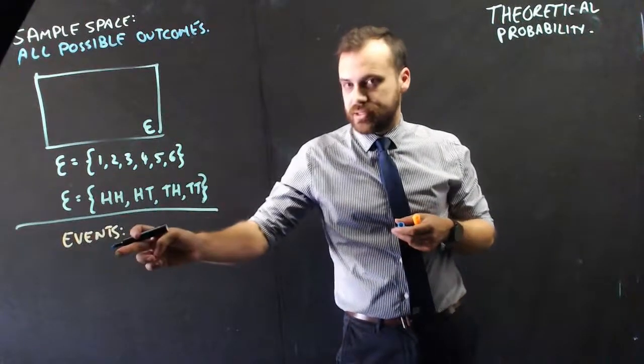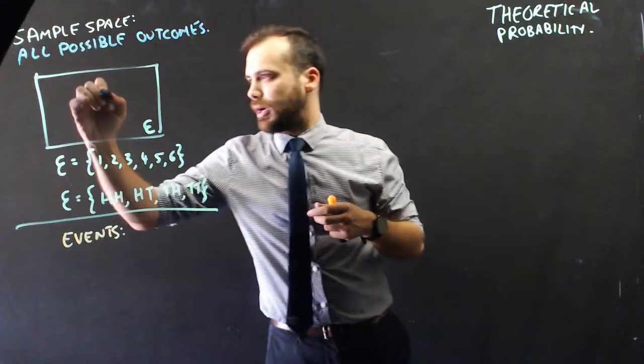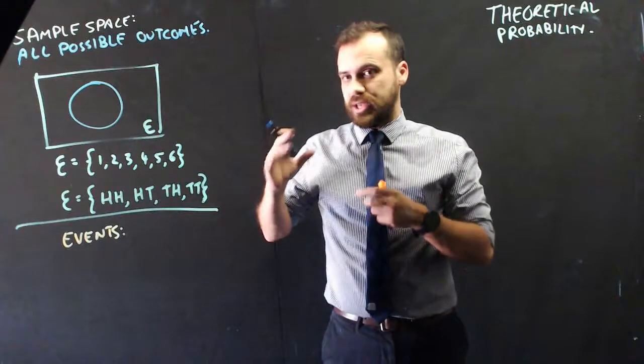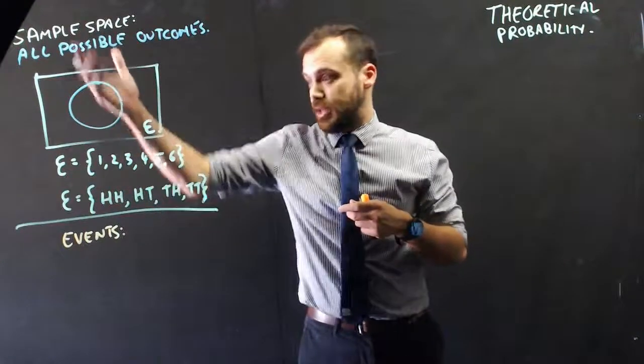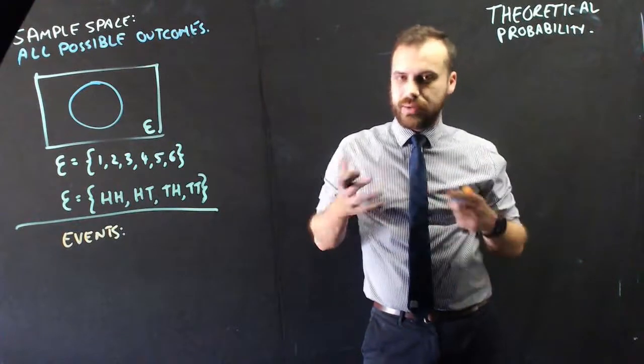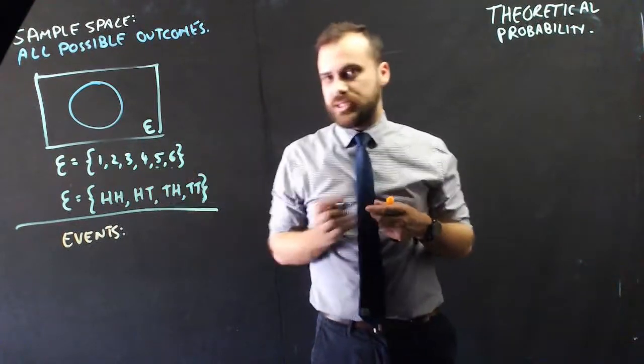So, the next thing we need to talk about are events. And events are what we would call a subset of the universal set, so a subset of the sample space. So, for instance, let's say you're playing a game with dice, and you win if you get a 5 or a 6.